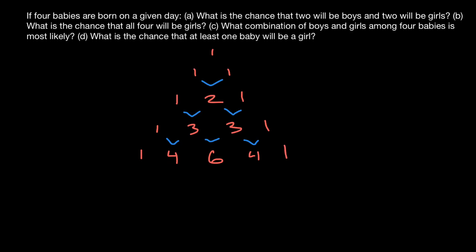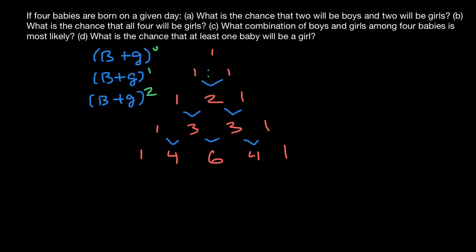This is basically binomial expansion. Row zero equals (boys + girls) to the power of zero. The second row equals (boys + girls) to the power of one. This would be true if a couple had just one child, where the child is equally likely to be a boy or a girl — a ratio of one to one. If a family would have two children, it's (boys + girls) to the power of two, and the ratio is one to two to one.